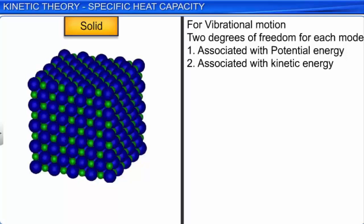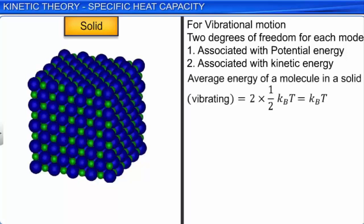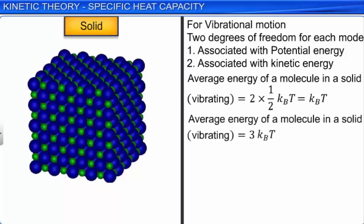All these predictions of specific heat capacities are based on the classical law of equipartition of energy, where the specific heat capacities are independent of temperature. But practically, this is not true. As the absolute temperature tends towards zero, the specific heat capacity of all substances approaches zero. This is because at low temperatures, the degrees of freedom get frozen. This was explained by quantum mechanics, because it requires a minimum non-zero energy before the degrees of freedom come into play.